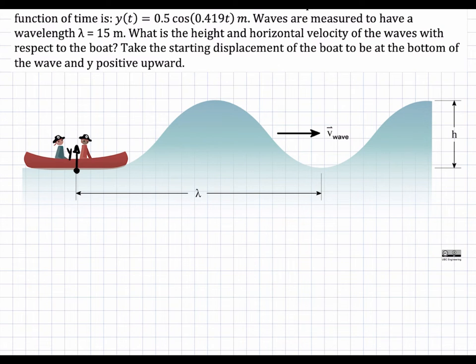In this problem, we have a boat that's sitting on top of some waves that are traveling with a certain velocity and have a certain height and wavelength. We're given this wavelength, lambda equals 15 meters. And we're also given the y of t, which is the vertical displacement of the boat as a function of time, and it takes a cosine function shape. We're asked to determine the height of these waves and the velocity these waves are traveling at with respect to the boat.